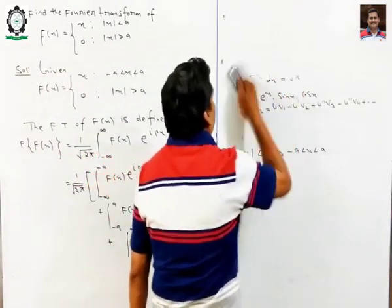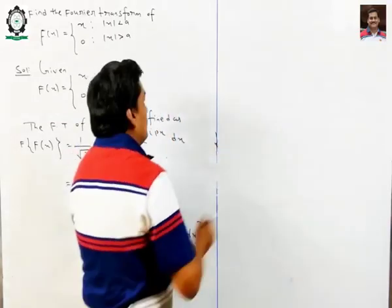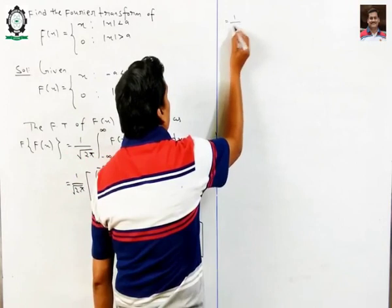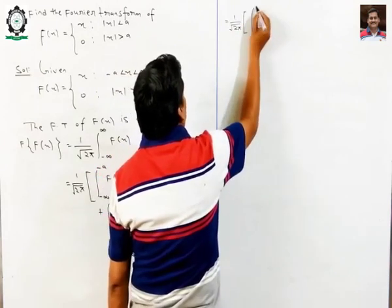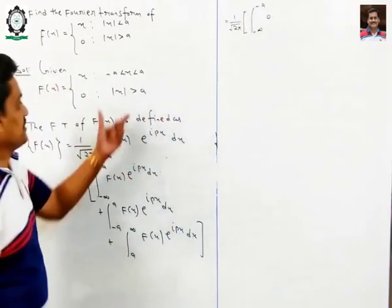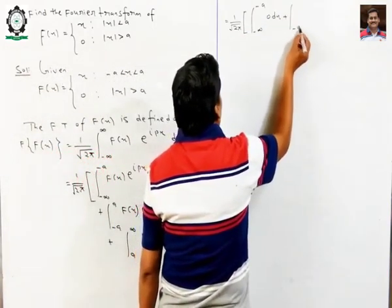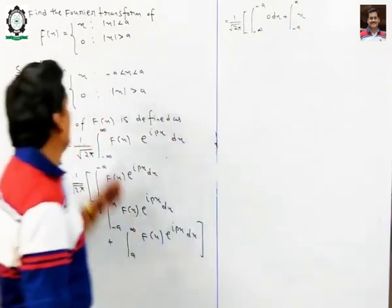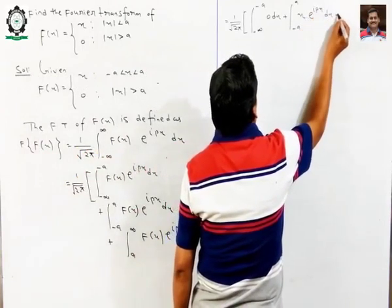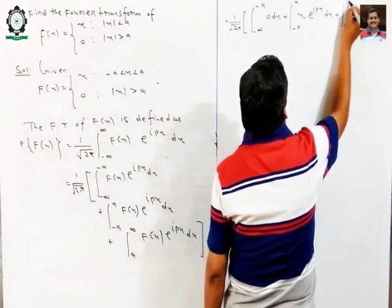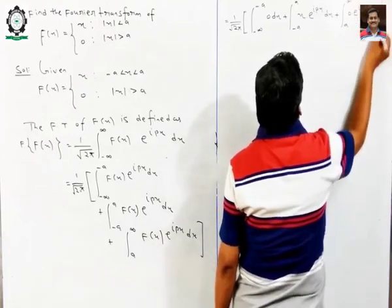This is 1 over root 2π. From minus infinity to minus a, f(x) = 0. From minus a to plus a, the function is x, so we have x times e to the power ipx dx. And the third part, from a to infinity, f(x) = 0, so we get 0 times e to the power ipx dx.